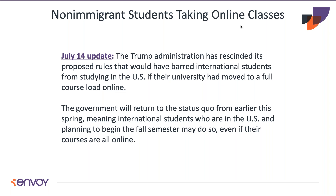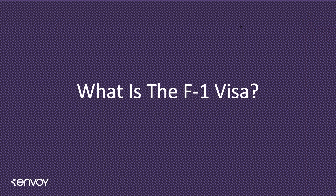Now we're back to that original set of exceptions that ICE made back in March. If the university is only offering online classes, then students in F-1 status will remain in valid status taking those online classes and can remain in the U.S. If the university opens up in the fall but then has to close down again because of the pandemic, the F-1 student will remain in valid status as long as they resume their course of study when the school opens back up. We'll now move into a more in-depth look at the F-1 visa.